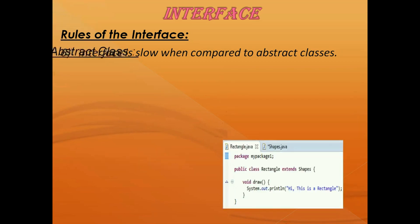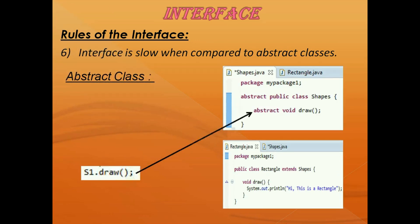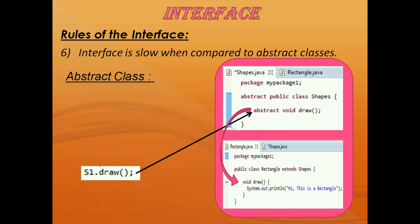When an abstract class is used, since it has common methods defined within it and the subclasses are generally in the same place, JVM does not have as much overhead to execute those methods — it can easily find them, so JVM takes less time. Hence, interfaces are slow when compared to abstract classes.